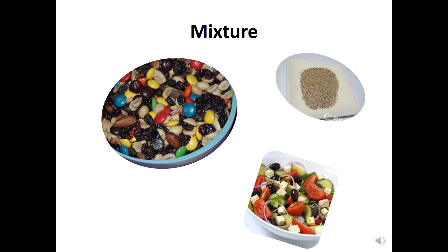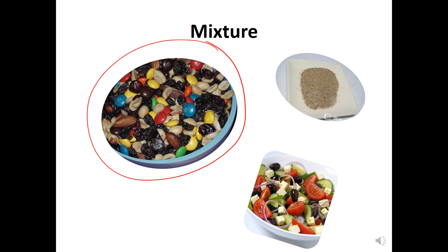The pieces in a mixture keep their own properties. For example, in trail mix the M&Ms still taste like M&Ms — if you're only eating the M&Ms they're still going to taste like M&Ms because they kept their own properties. And mixtures can be easily separated.